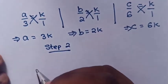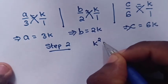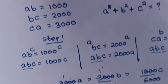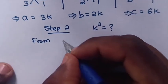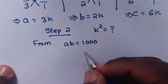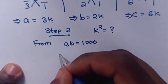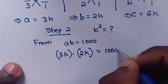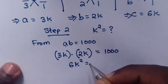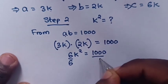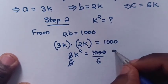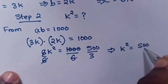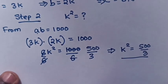Step 2: We find the value of K². From AB equals 1000, substituting A equals 3K and B equals 2K gives 6K² equals 1000. Dividing both sides by 6 and simplifying: K² equals 500/3.